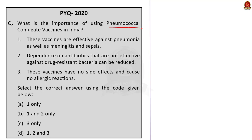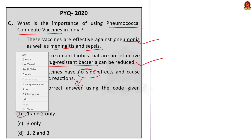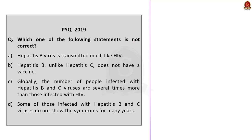In the hepatitis vaccine question, they're asking what is not correct. The answer is option B, because hepatitis B has a vaccine but hepatitis C does not have a vaccine as of now.